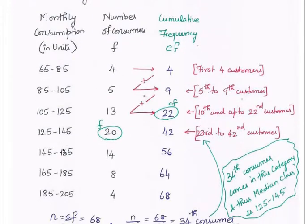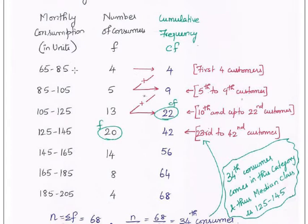Now we are finding the cumulative frequency. What is cumulative frequency? It is an added-up value — you are accumulating the frequency values. From 65 to 85, the frequency is 4. So up to 85, how many consumers have got this many units of electricity? 4 consumers. Up to 105, how many consumers have got this consumption? From 65 to 105, that is 4 and 5 together, totally 9 households.